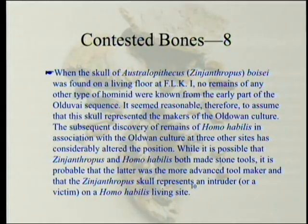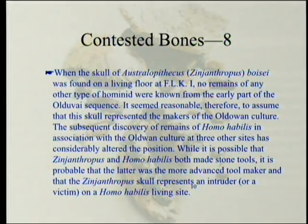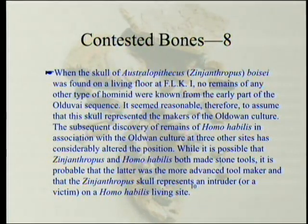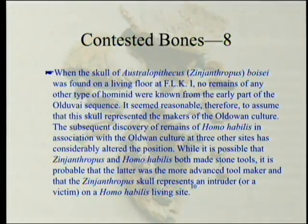The subsequent discovery of remains of Homo habilis in association with the Olduvai culture at three other sites considerably altered the position. While it is possible that Zinjanthropus and Homo habilis both made stone tools, it is probable that the latter was a more advanced toolmaker and that the Zinjanthropus skull represented an intruder or a victim on a Homo habilis living site. Think of it — Africans today eat bushmeat, so this could have been an ape they captured, killed, and butchered. That might explain why the skull is fractured.